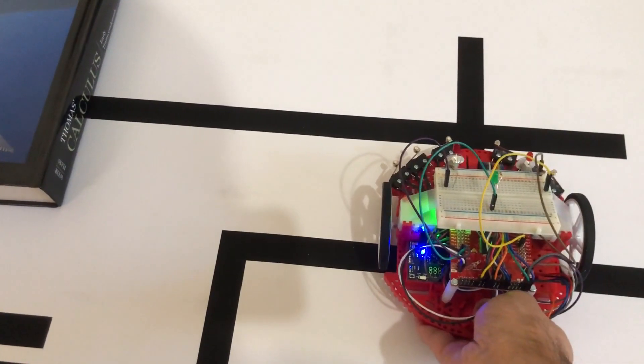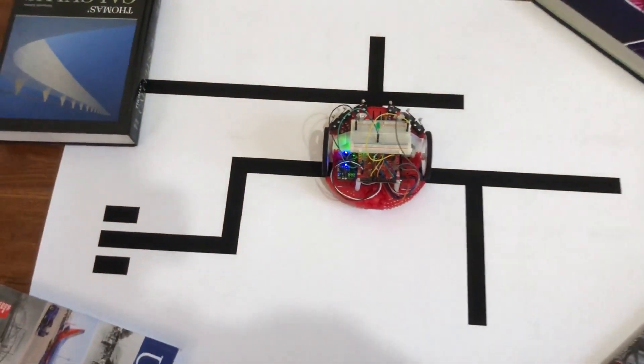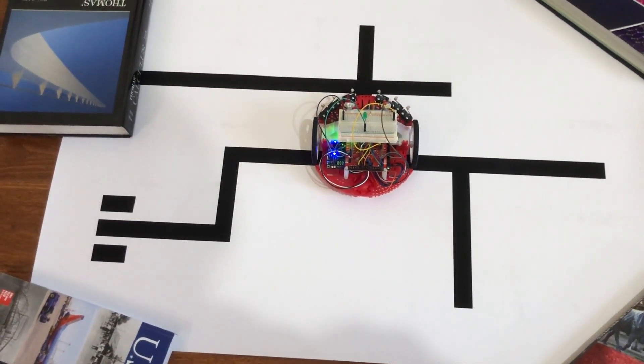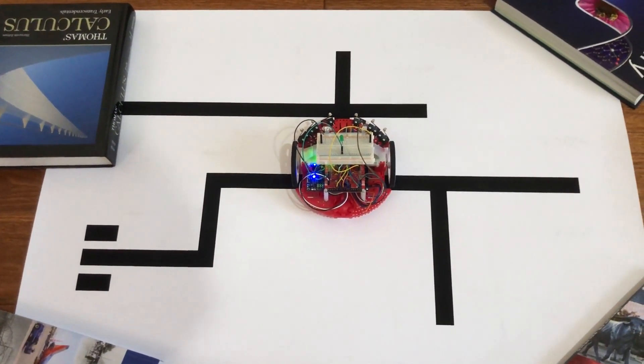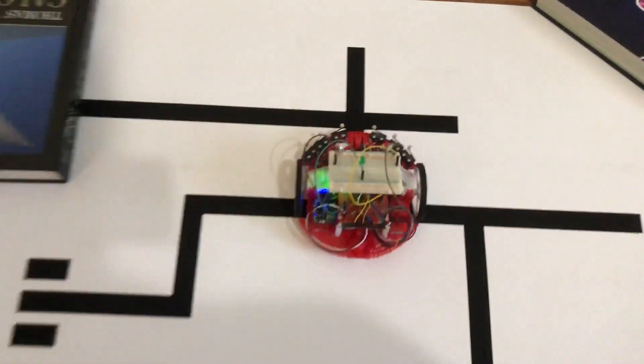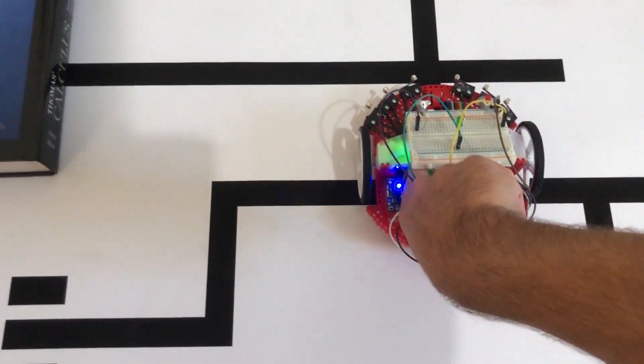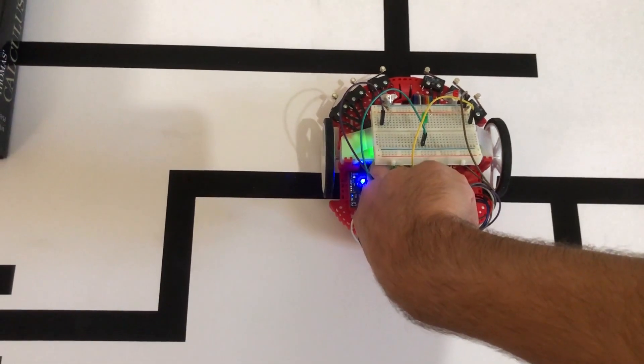Now I'm going to show it solving the maze from a hard starting spot. Starting here in the middle of the maze is not generally a place you would expect a robot to be, so a lot of people don't think about this when designing maze algorithms. But it is able to solve the maze from the middle, and placing it here it goes across every line. I'm pressing the left button to tell it that it's solving a new maze.